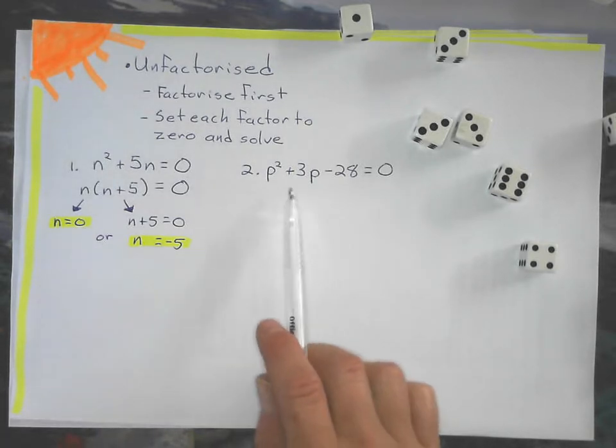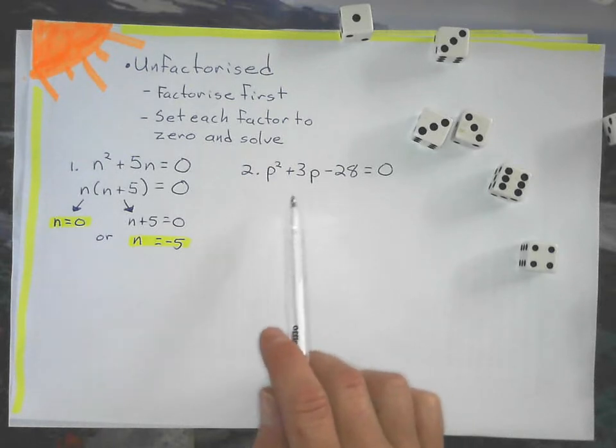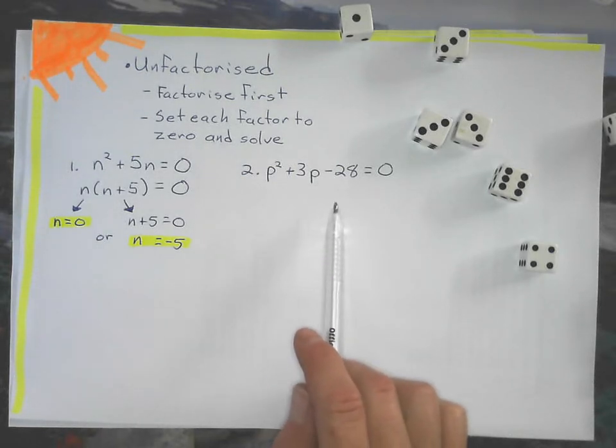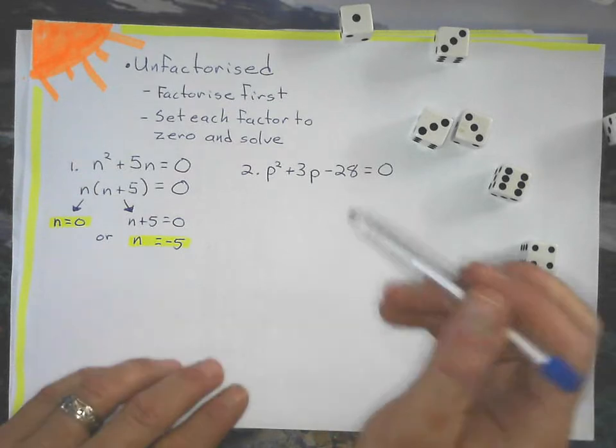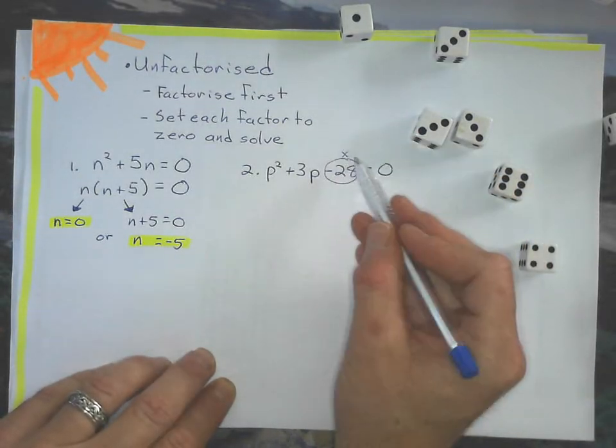The next one doesn't have a common factor. So I have to factorize it using the opposite of expanding, where I say what two numbers multiply to get negative 28.